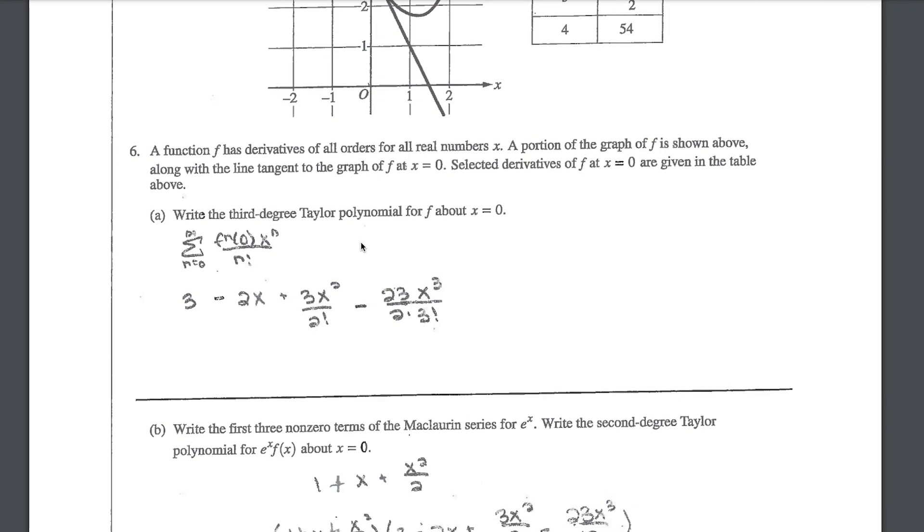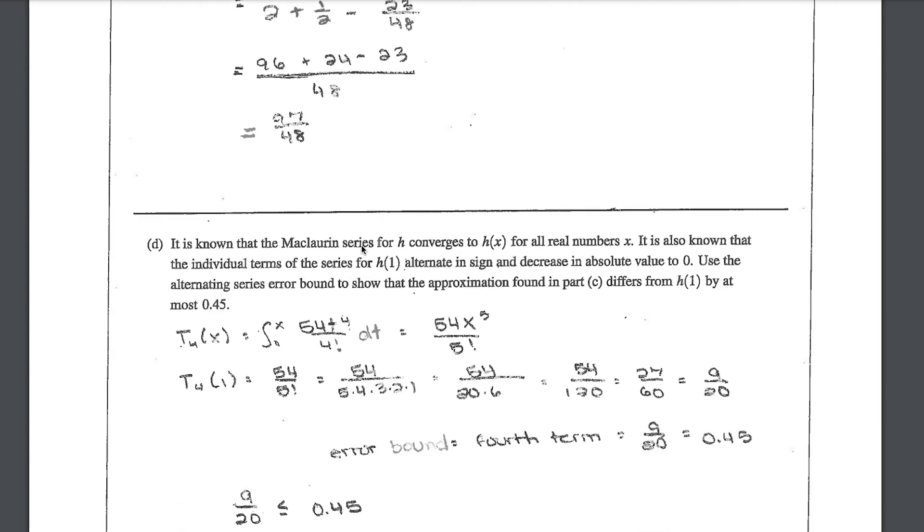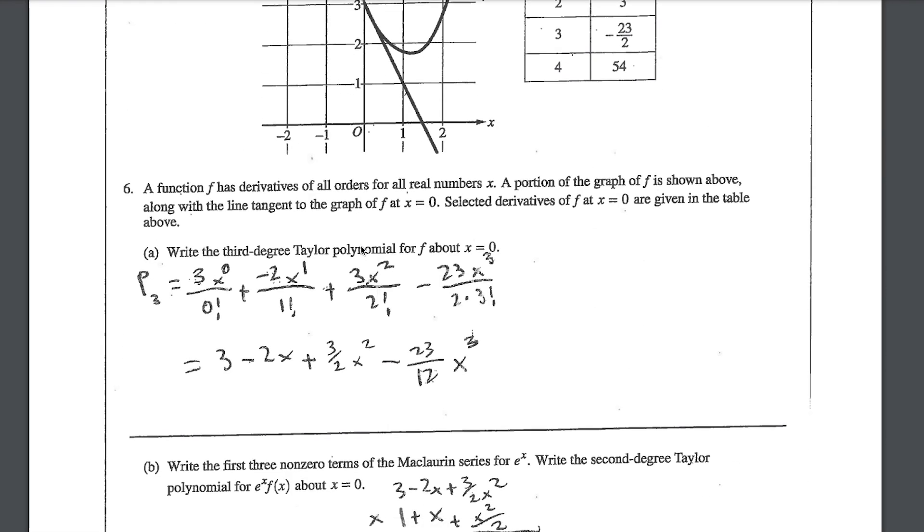So for this one here, this is the first student that gets nine out of nine, and we could look at what a perfect solution looks like. But sometimes you could gain a lot from learning from the students that did lose points.